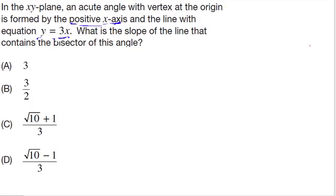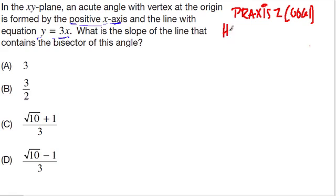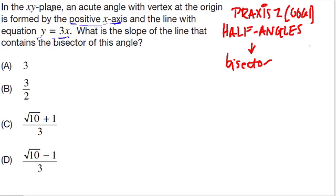Here's an interesting problem from a Praxis 2 test on trigonometry. This is from the Praxis 2 for the 0061 test, the math content test. This is an important question because it reminds us that we need to know the half-angle formulas for trigonometry. Half-angles definitely relate to bisectors, and that's what we have in this question. In the XY-plane, an acute angle with a vertex at the origin is formed by the positive x-axis and the line y equals 3x. What is the slope of the line that contains the bisector of this angle?